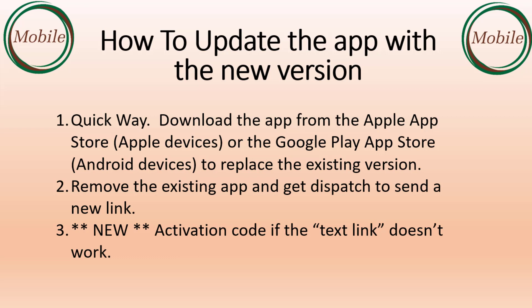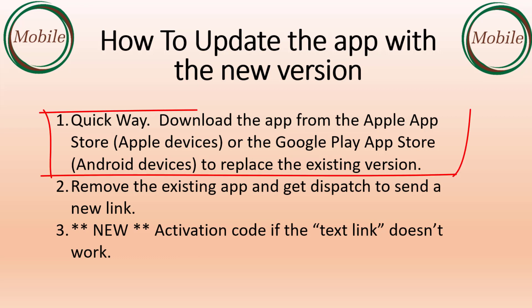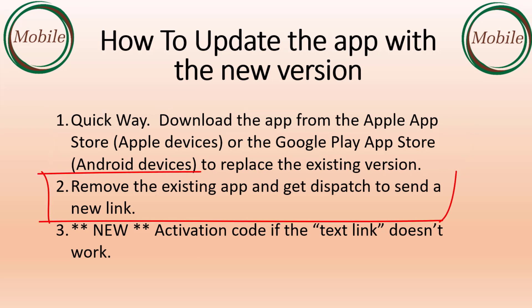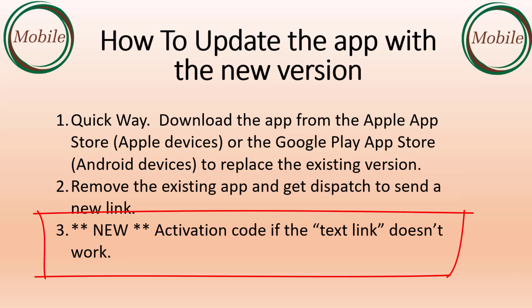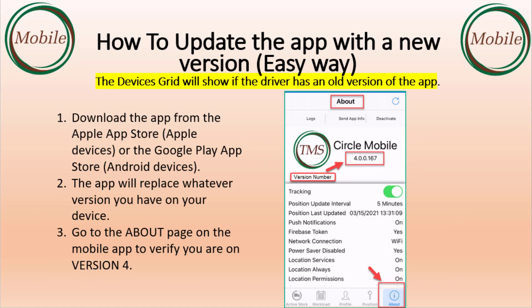There are three ways to get the latest version. You can download the app from the Apple Store or the Google Play Store, which will replace your existing version. You can remove the existing app and get dispatch to send you a new link to download the new app. Or you can remove the existing app, download it from the App Store, and get dispatch to send you the activation code.